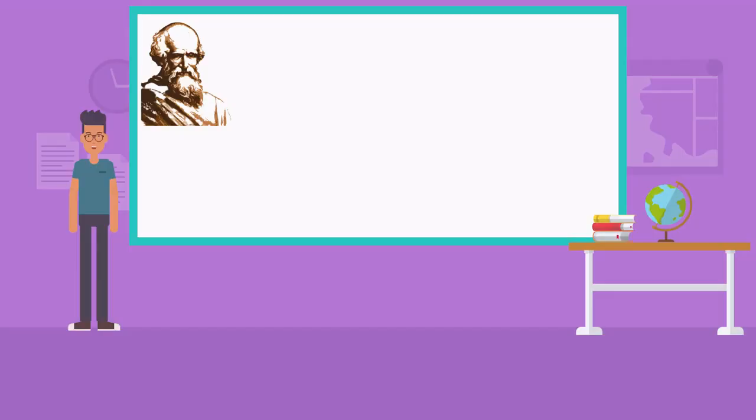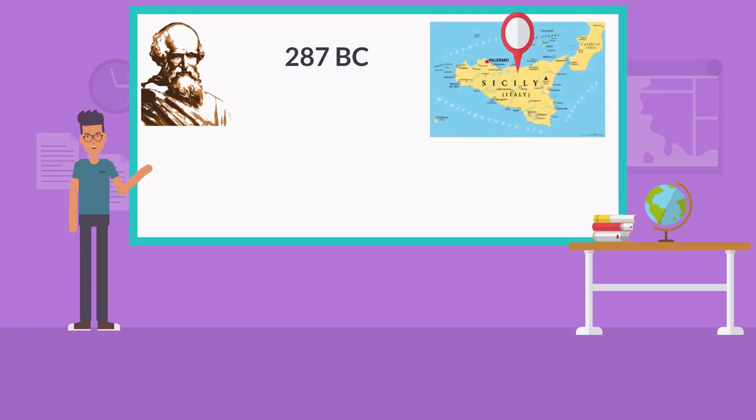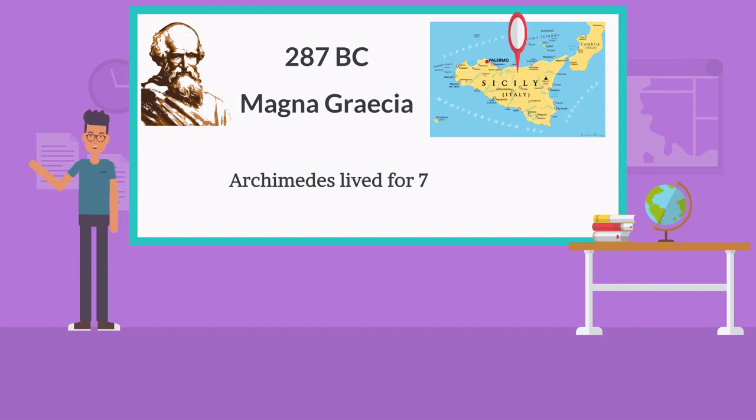Archimedes was born around 287 BC in the city of Syracuse, Sicily, a self-governing colony in Magna Grecia at the time. The birth date is based on a claim made by the Byzantine Greek historian John Tsitsis that Archimedes lived for 75 years before his death in 212 BC.